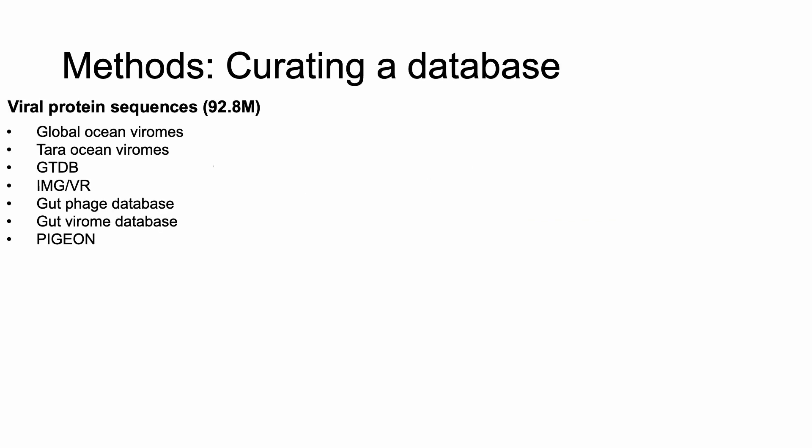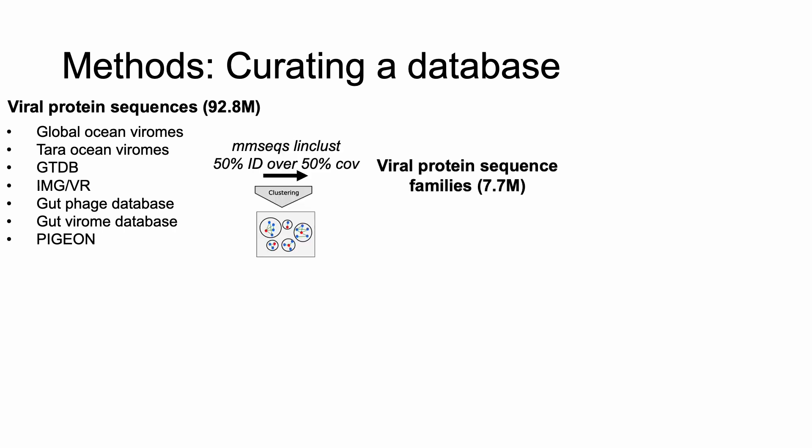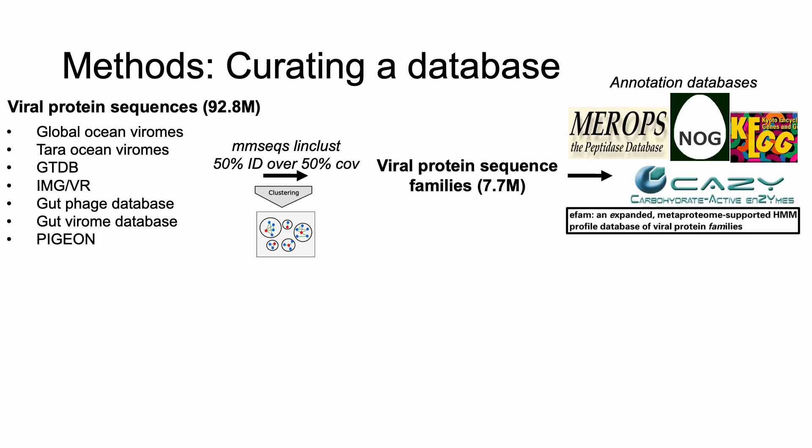To begin constructing this database, I first pooled all major repositories of viral protein sequences for a total of almost 100 million sequences. These databases represent environments ranging from oceans, fresh water, to soils, and host-associated microbiomes like the mammalian gut, as well as cultured viruses. I then used a clustering tool called MMSeqs to cluster these 100 million sequences into about 8 million protein families. To decipher the function of each protein family, I annotated these families against five different annotation databases.